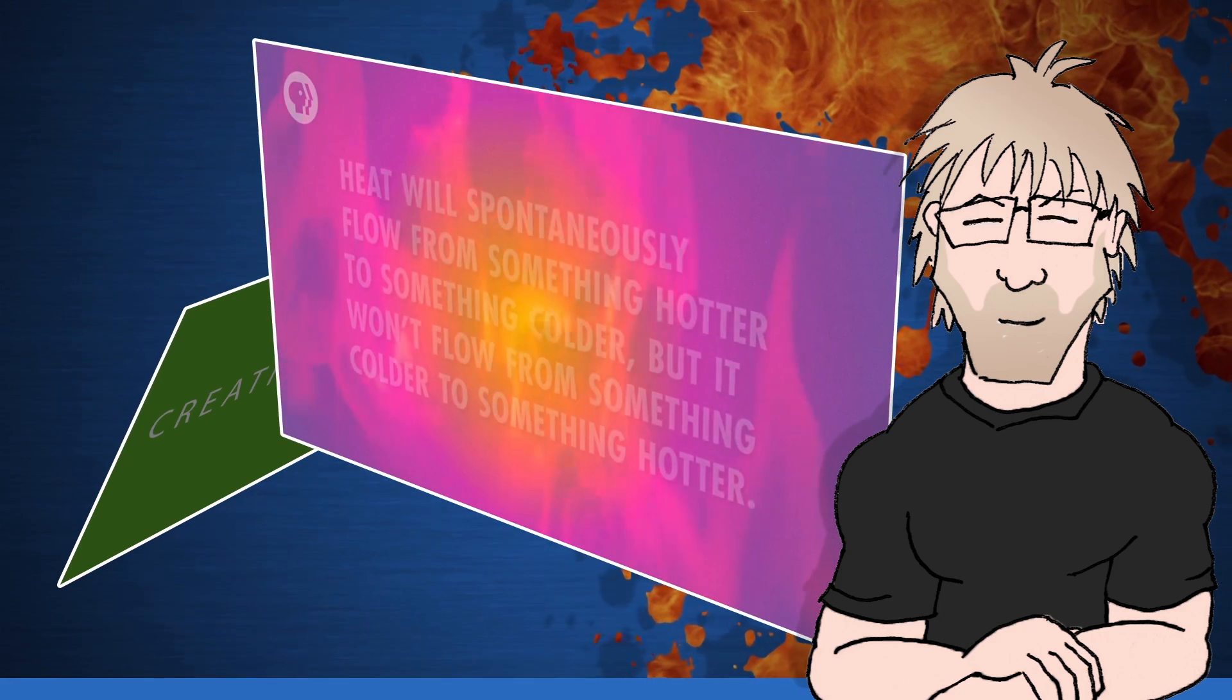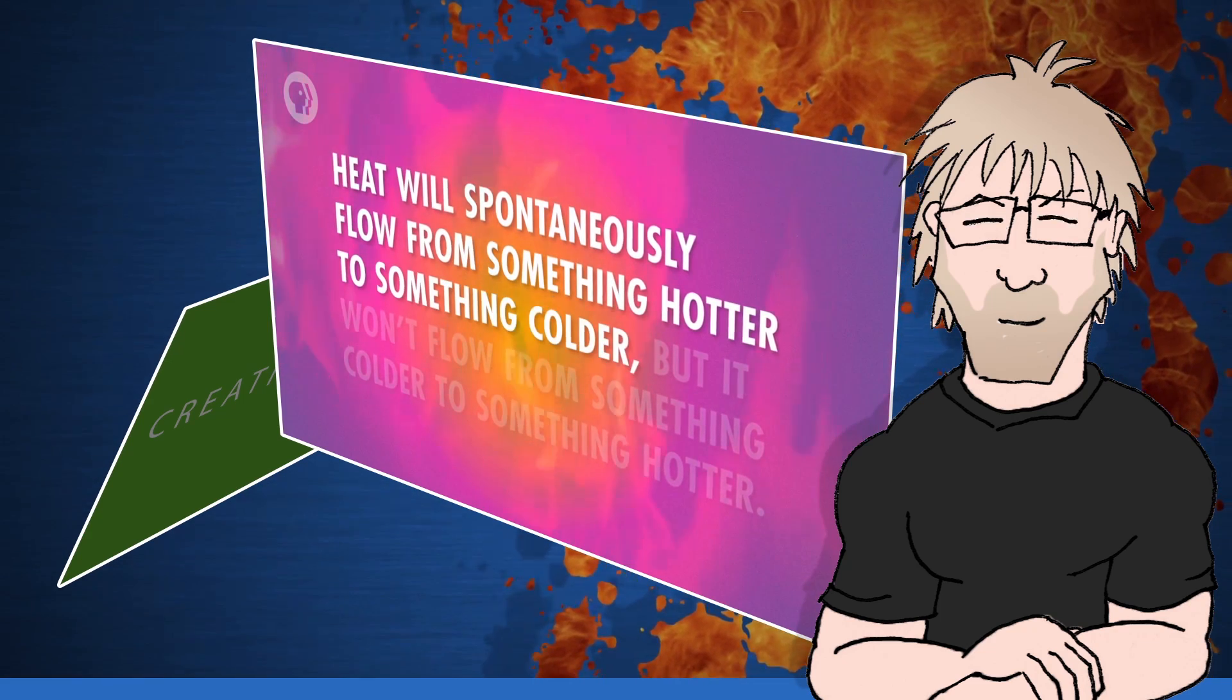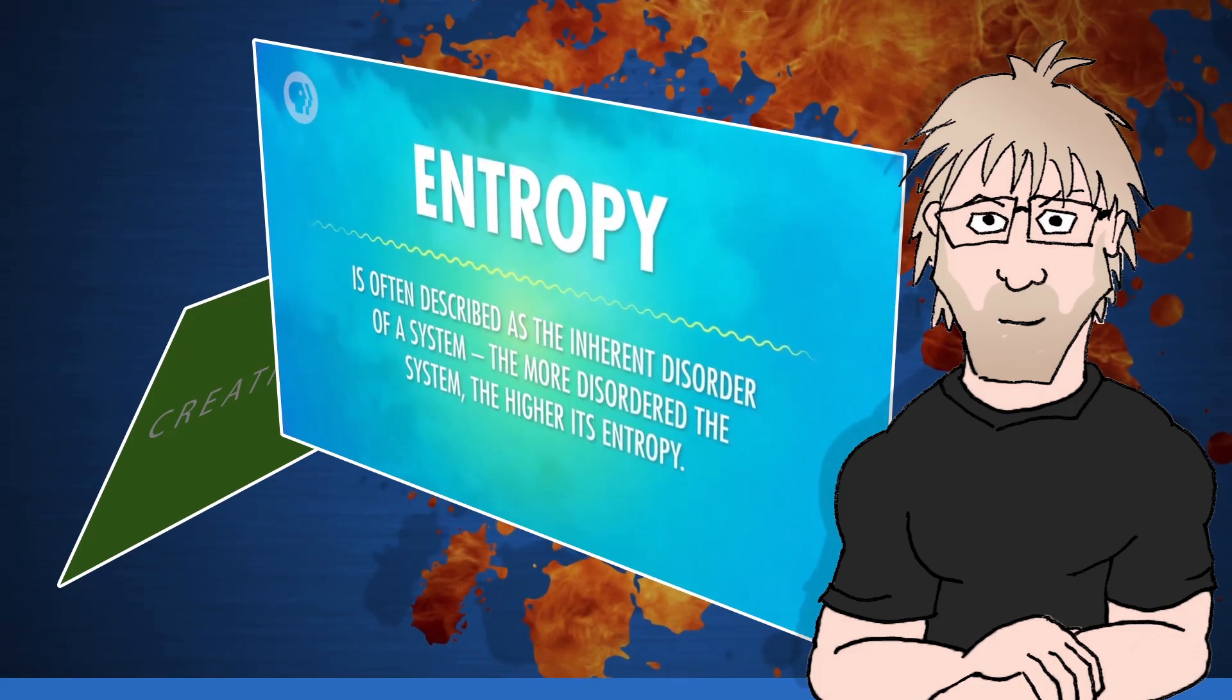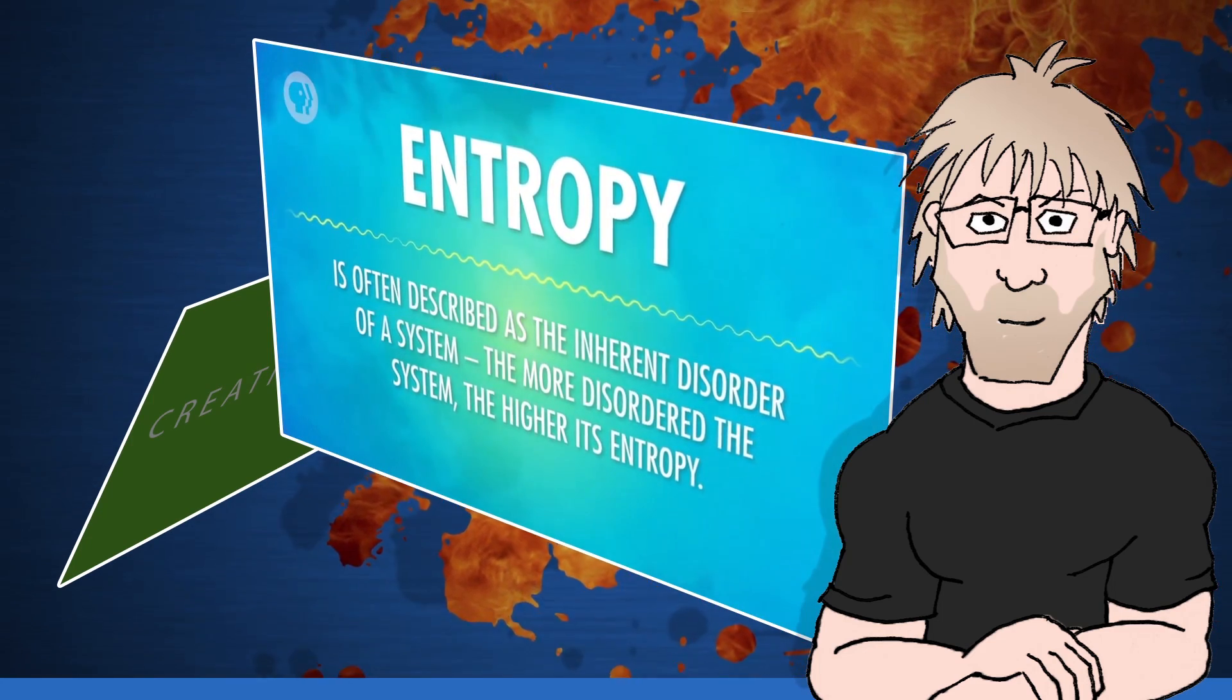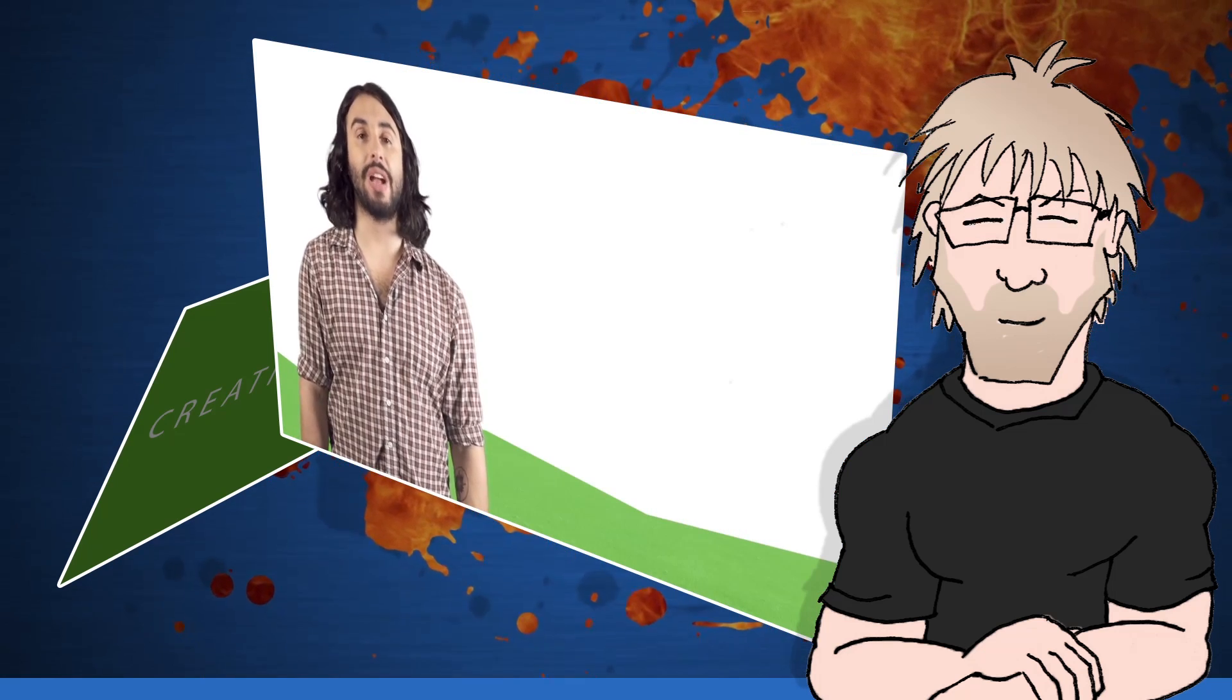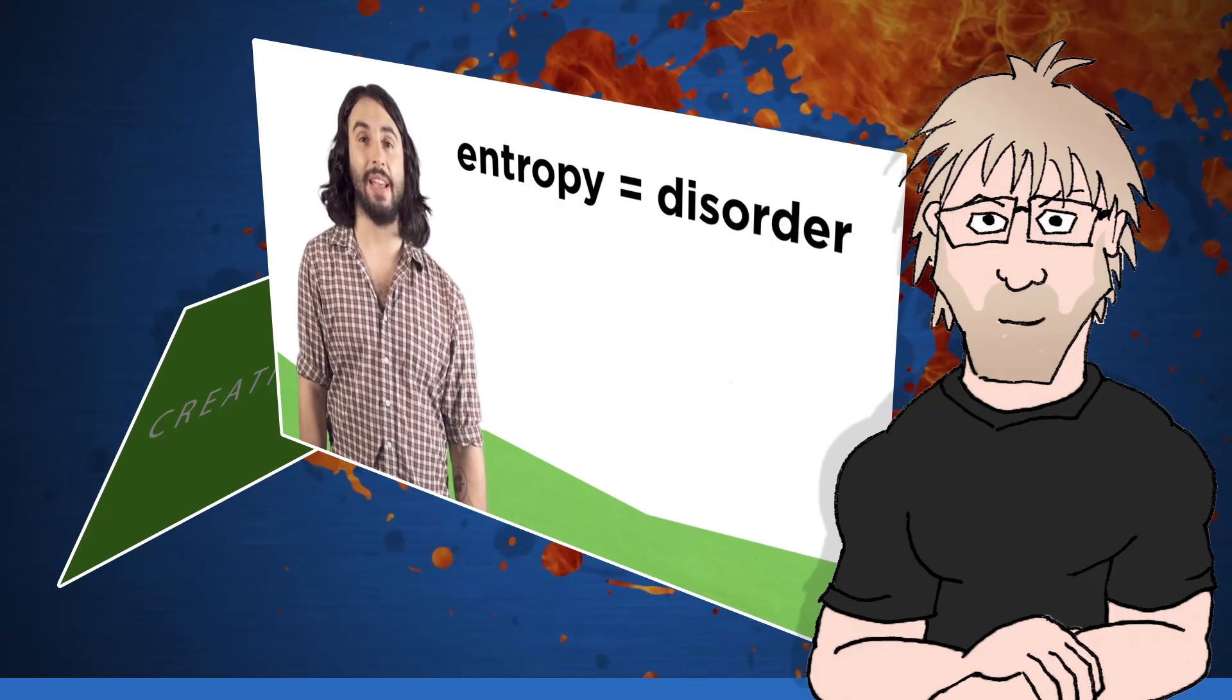There's also the second law, which says that heat will spontaneously flow from something hotter to something colder, but it won't flow from something colder to something hotter. And that's because of this thing called entropy. Entropy is often described as the inherent disorder of a system. The more disordered the system, the higher its entropy. The second law introduces a new concept, entropy.